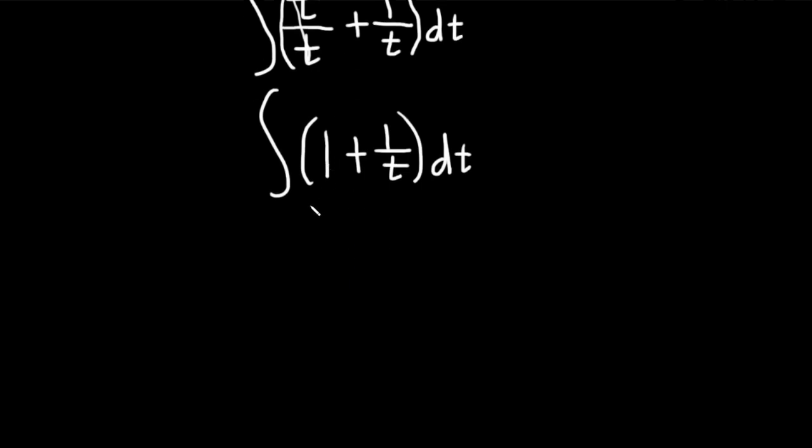When you integrate 1 you get t, and when you integrate 1 over t you get the natural log of the absolute value of t, plus our constant of integration C.